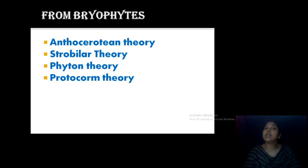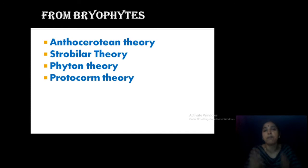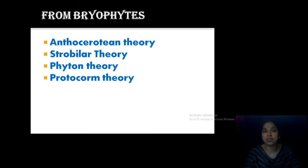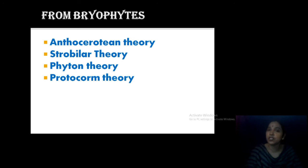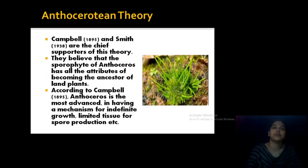First let us discuss the various theories that explain how pteridophytes evolved from bryophytes. There are some particular theories you have to study: the Anthocerotian theory, the Strobilar theory, the Phyton theory, and the Protocorm theory. First, what is the Anthocerotian theory? You know the Anthoceros plant — you studied its life cycle in the last semester in bryophytes.